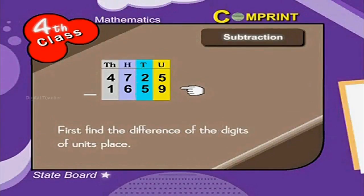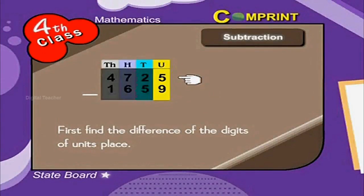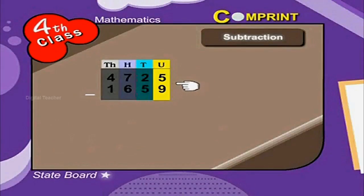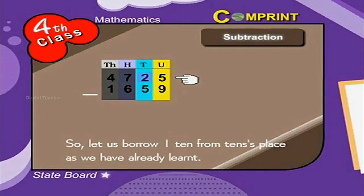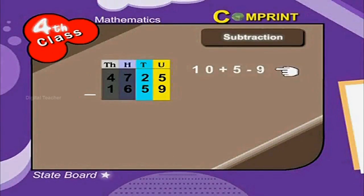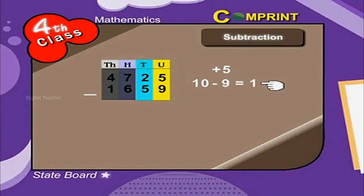First, find the difference of the digits of units place. That is 5 minus 9. Here, 5 is lesser than 9. So, let us borrow one 10 from tens place as we have already learnt. So, that we can say 10 plus 5 minus 9. That is equal to 10 minus 9 is equal to 1 plus 5 is equal to 6.